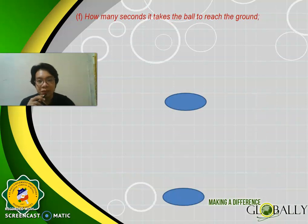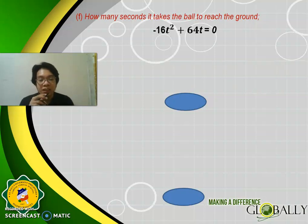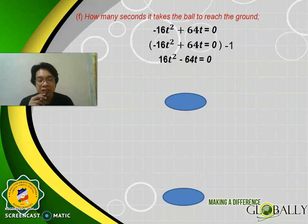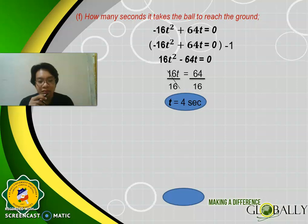For part F — how many seconds does it take the ball to reach the ground? Write the equation of motion S = −16T² + 64T and set S = 0. Factoring: 16T(−T + 4) = 0, giving T = 4 seconds. Dividing: 16T = 64, so T = 4 seconds. Therefore, the ball will reach the ground in 4 seconds.